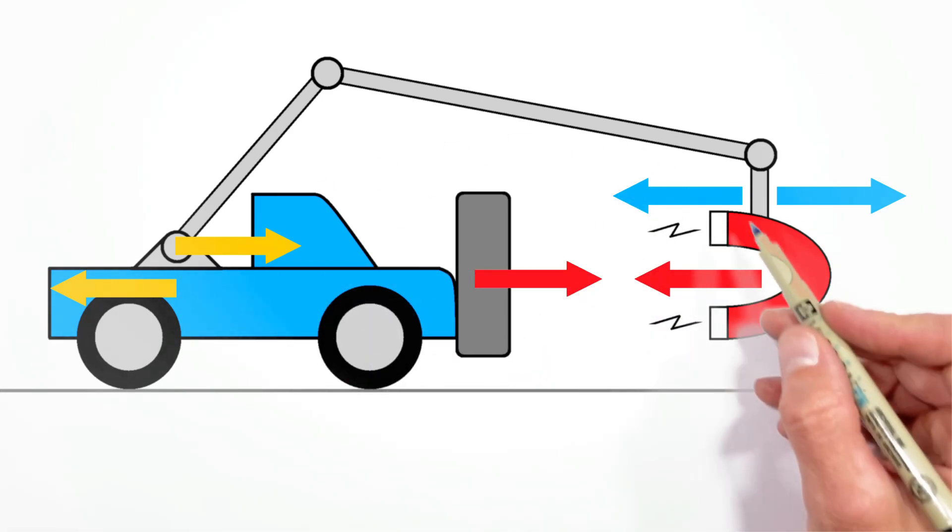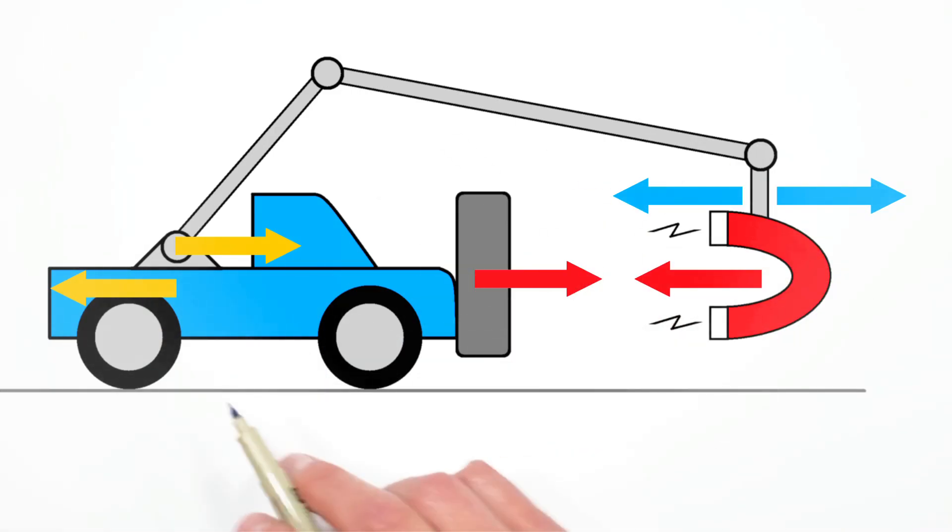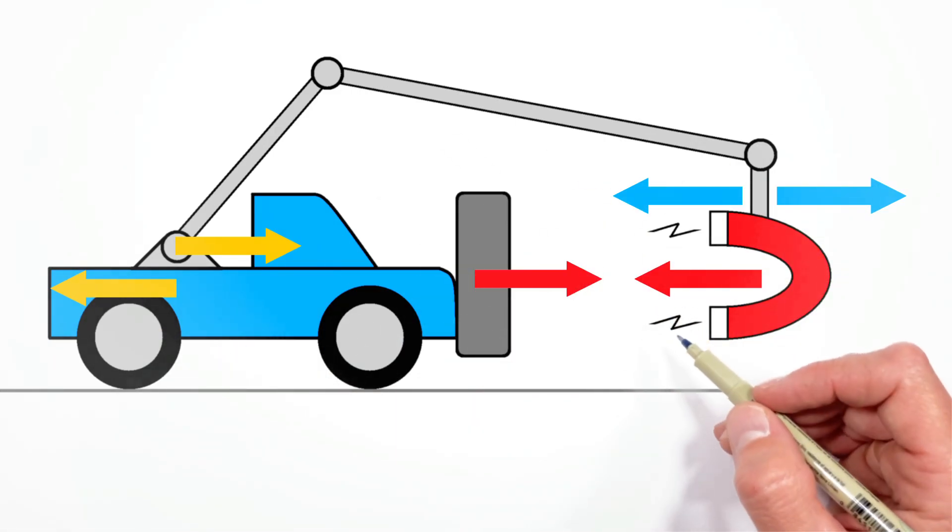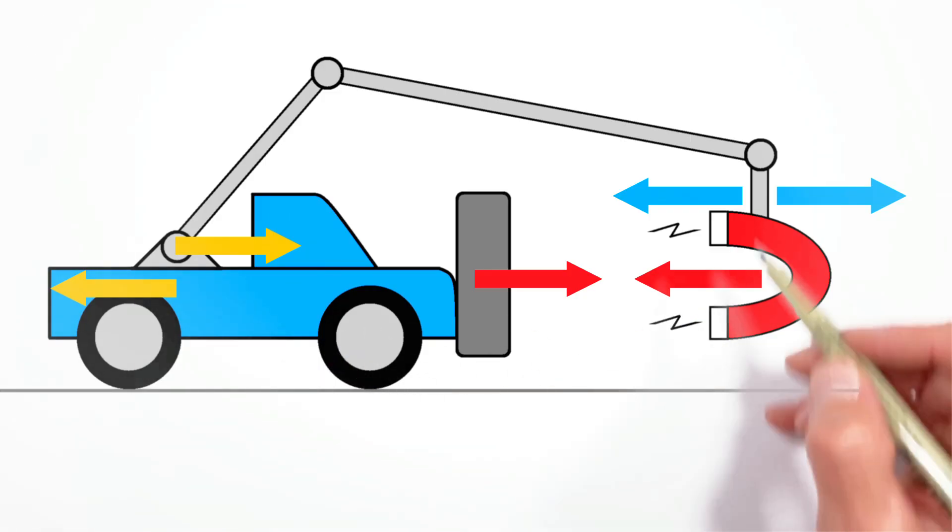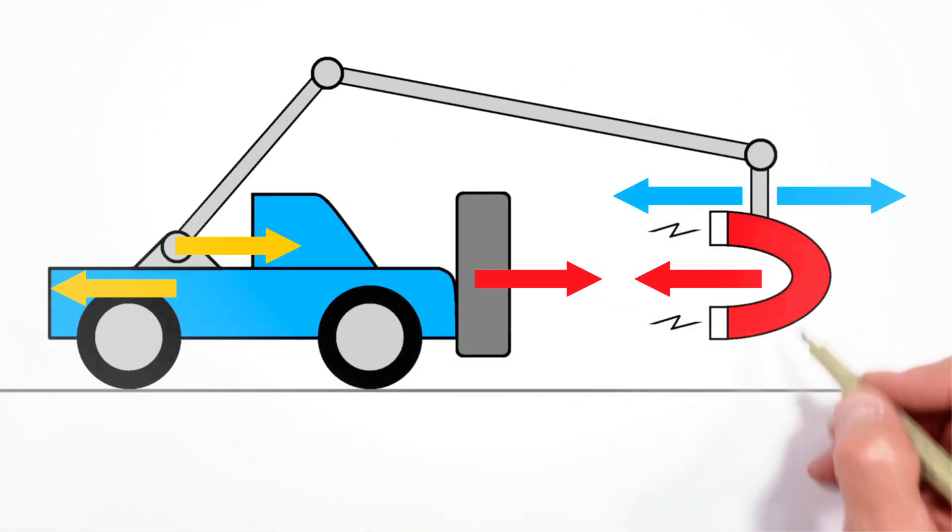You see, everything here is connected as one rigid system, and there are no forces that are acting external to the system, meaning there's nothing from the outside world pushing this truck forward. So, all we have are forces that are sort of acting internally within our little truck beam magnet system.